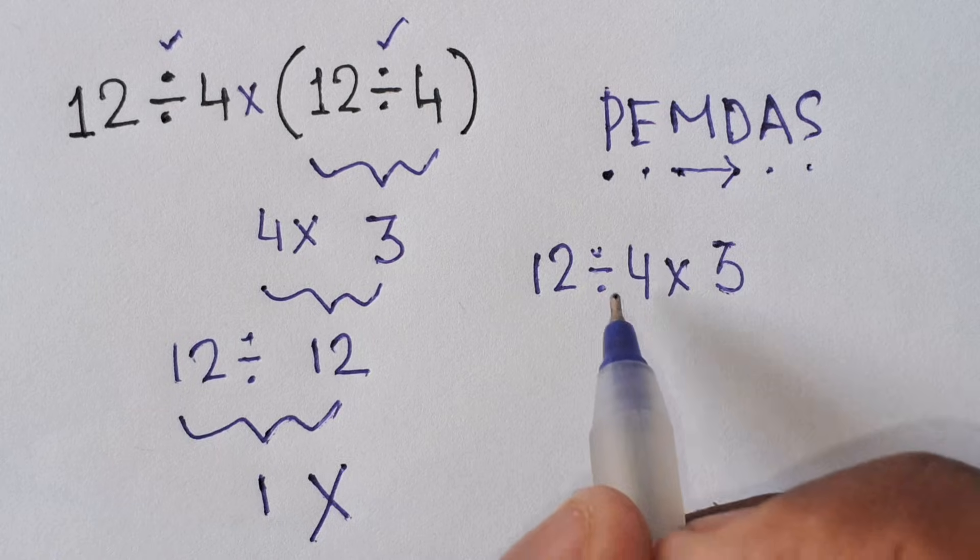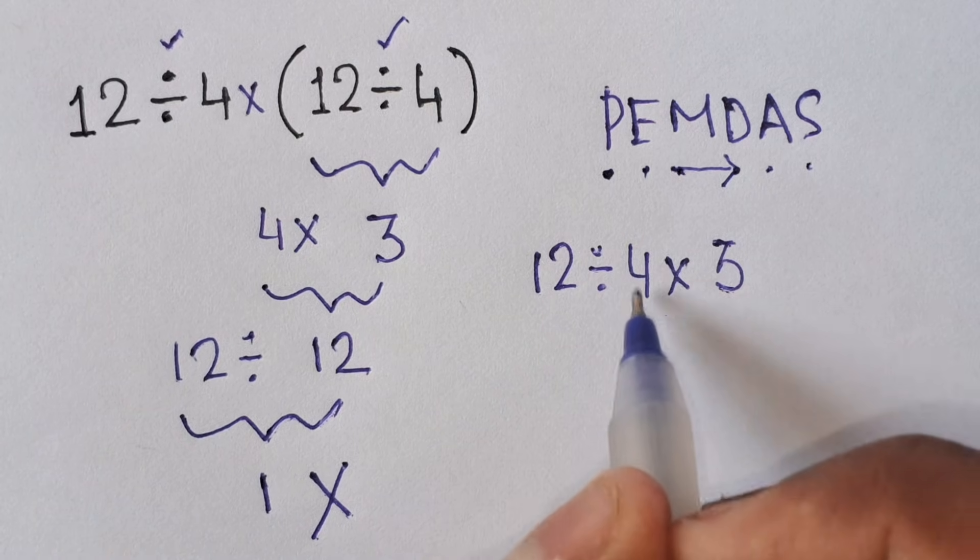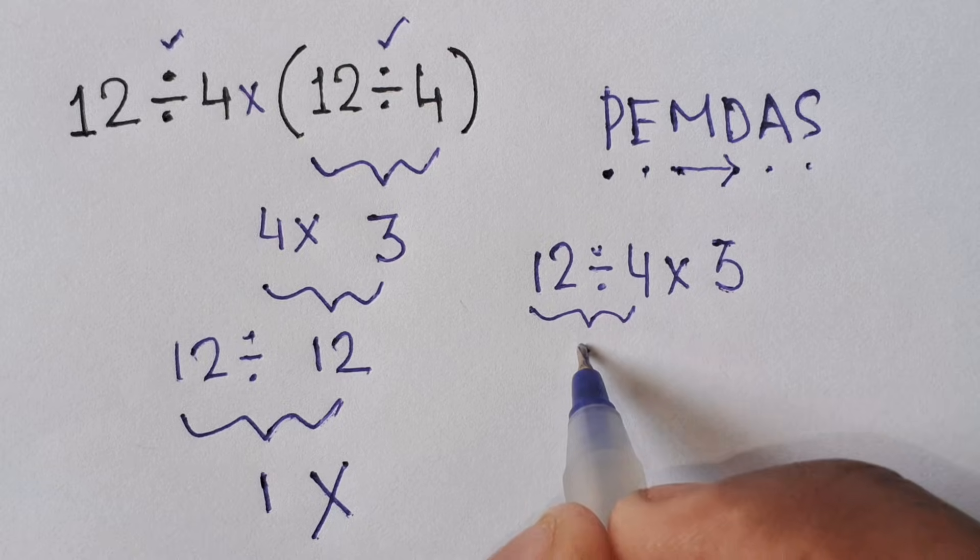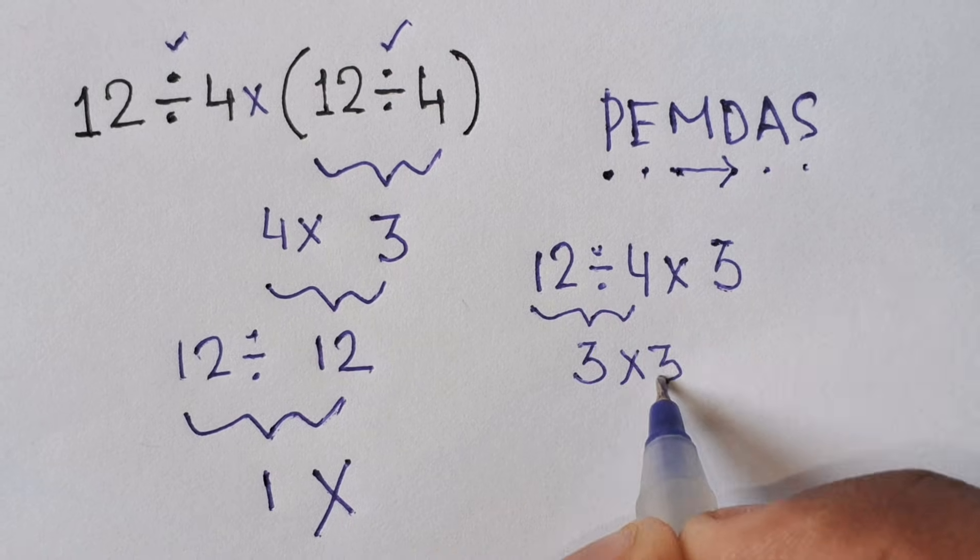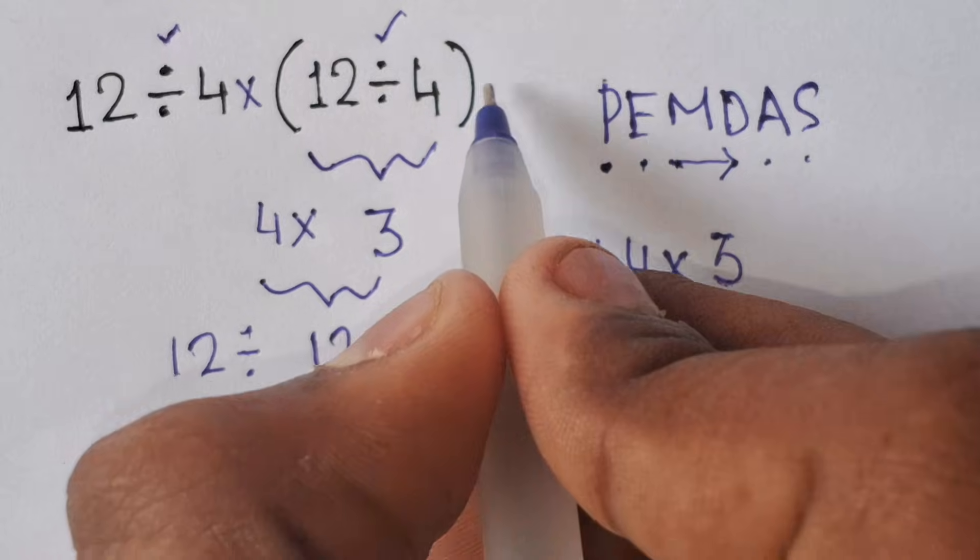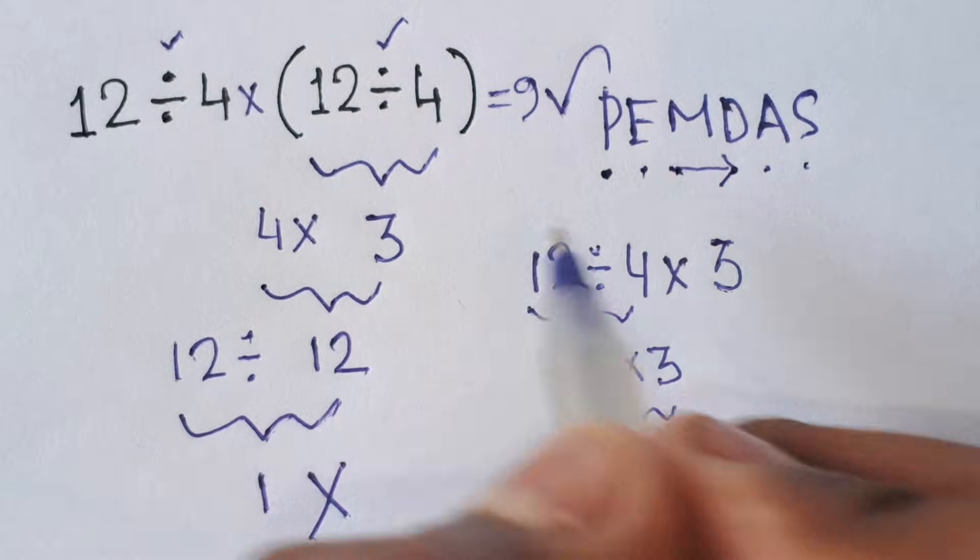So first we have to solve this division instead of this multiplication. First, 12 divided by 4 equals 3 times 3. So 3 times 3 equals 9. So 9 is the final answer for the expression.